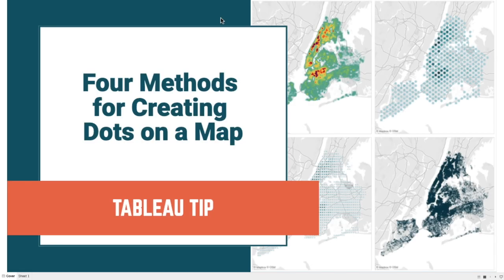In this week's Tableau Tip Tuesday, I'm going to show you four different methods for creating dots on a map. The examples on the right-hand side show a density map, a regular dot map, using the rounding function to create groupings of locations, and then using the hex bin function. Let's take a look at each of those.